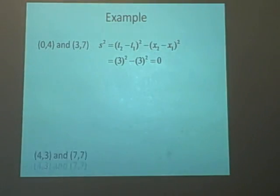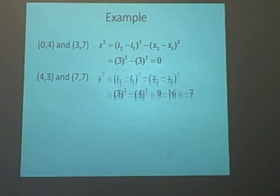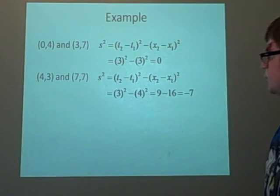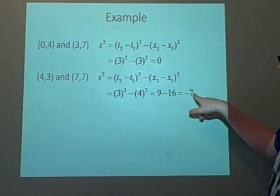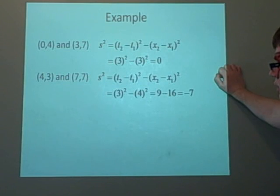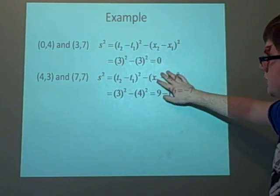The final example is points (4,3) and (7,7). We find the squared interval: s² = (3)² - (4)² = 9 - 16 = -7, which is negative, so it's space-like because the space part is bigger.